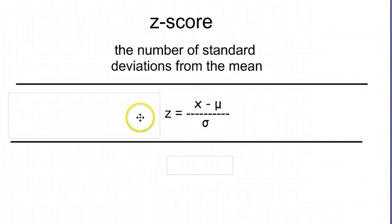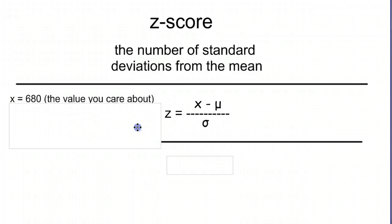Z-score refers to the z-score. The other ones, x, is the individual that you're looking for, the score that you have. So in that last example it was the 680 that this person scored.